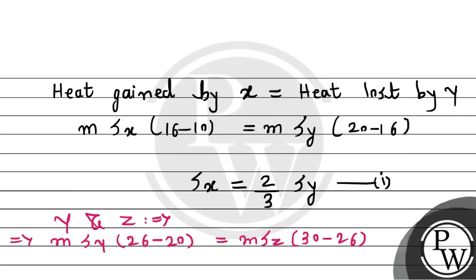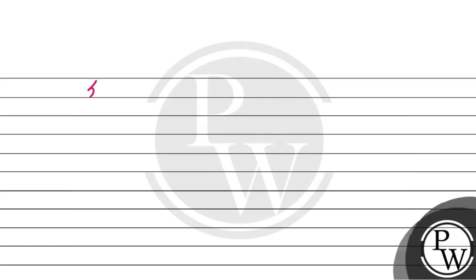So simplifying, we get S of Y. This will be equation 2 divided by 3 into S of Z. This will be equation number 2. So from equation 1 and 2, it is concluded that S of X is nothing but equals to 4 by 9 times S of Z. This will be equation 3.